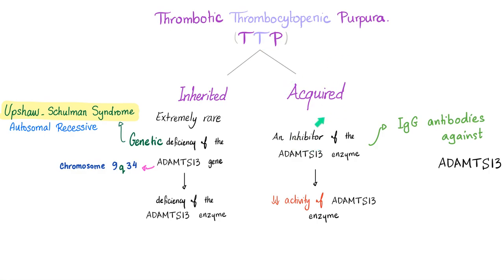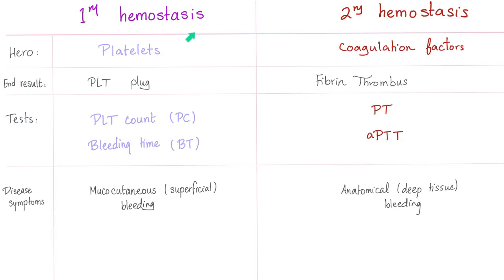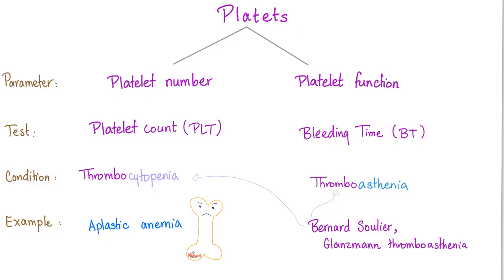Acquired TTP, on the other hand, has an inhibitor. The secretion is fine — we have lots of ADAMTS13 — but there's an inhibitor rendering it useless, leading to decreased activity. The inhibitor is IgG antibodies against ADAMTS13. Since TTP is a problem with primary hemostasis: platelet count is low, bleeding time is high, but secondary hemostasis is normal, so PT and PTT are fine. In TTP, you have thrombocytopenia — a problem in the number — which leads to increased bleeding time.